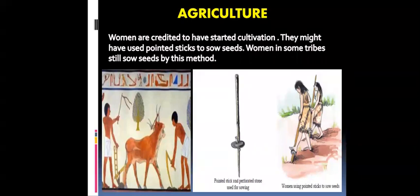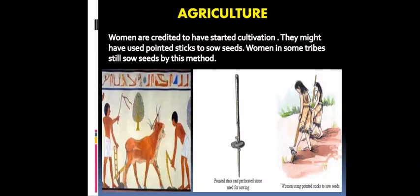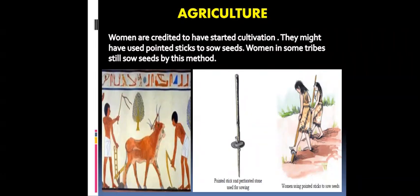Archaeological evidence shows that agriculture began about 11,000 years ago, and it was first started in Israel and Iraq. Women are credited with starting cultivation. They might have used pointed sticks to sow seeds — as you can see on the screen, this is a stick with a point at the bottom. This method is still used by women in some tribal areas today. In order to help dig deeper into the soil, the stick was weighted using a perforated stone attached to it.